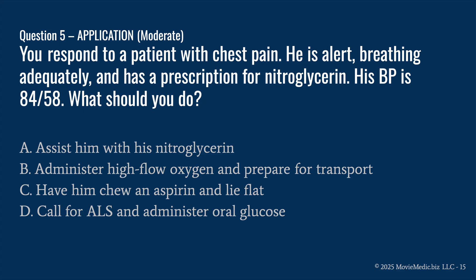Question five. You respond to a patient with chest pain. He is alert, breathing adequately, and has a prescription for nitroglycerin. His blood pressure is 84 over 58. What should you do? A: Assist him with his nitroglycerin. B: Administer high flow oxygen and prepare for transport. C: Have him chew an aspirin and lie flat. Or D: Call for ALS and administer oral glucose.